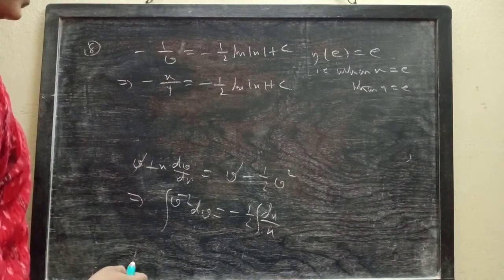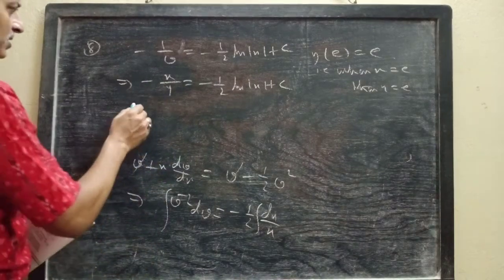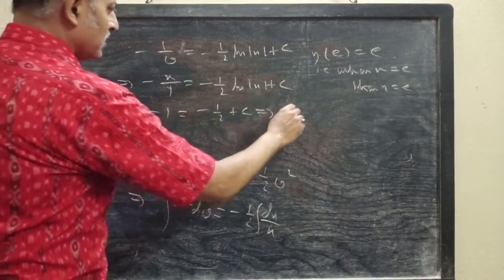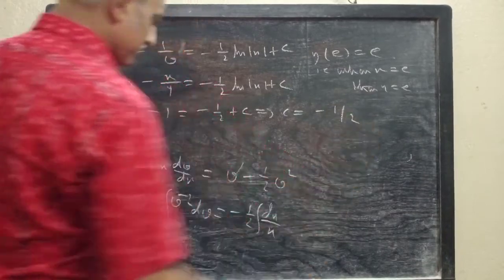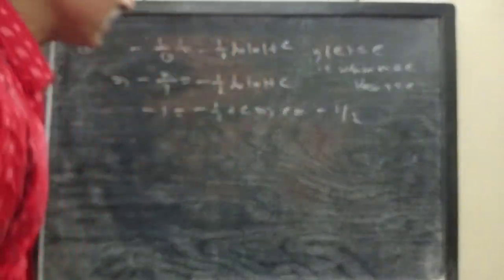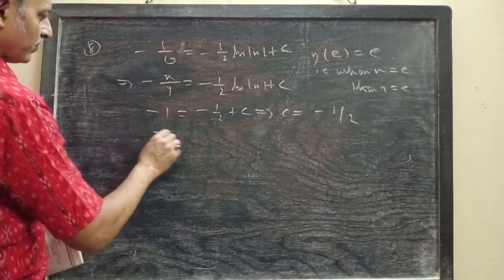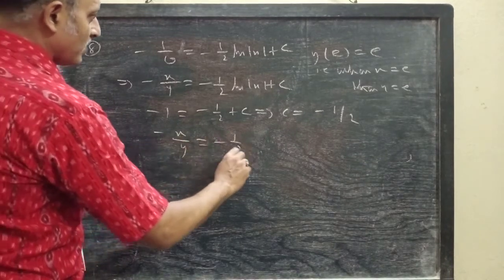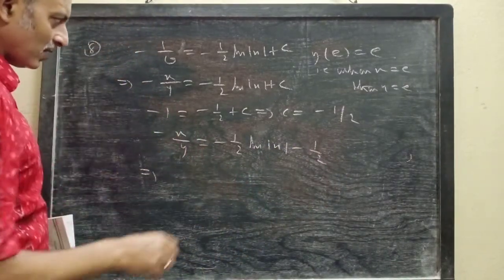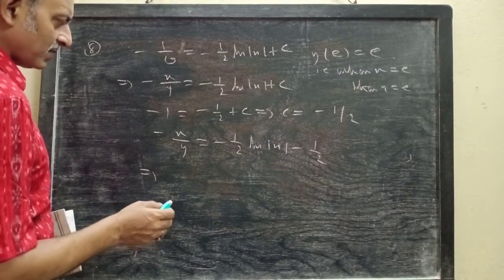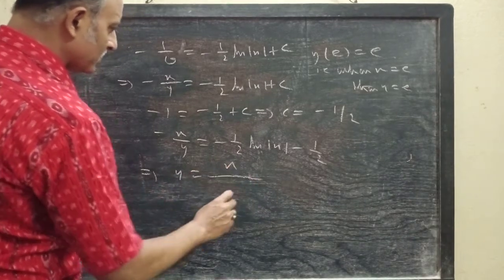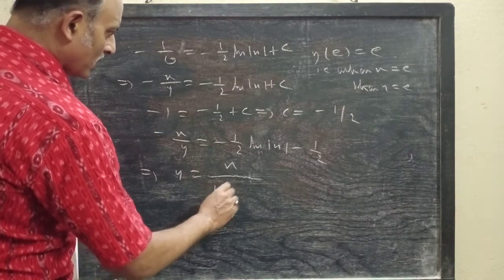Now from the initial condition, when x equals e then y equals e. Substituting, you get minus 1 equals minus half plus c, which gives c equals minus half. So the particular solution satisfying the given condition is: minus x/y equals minus half·ln|x| minus half.